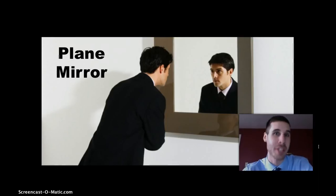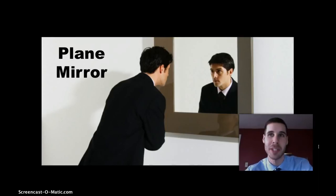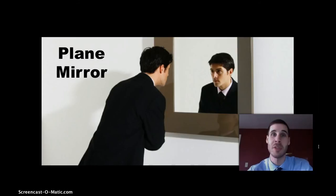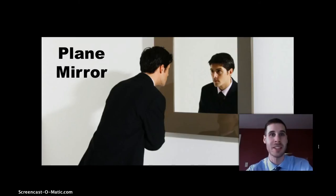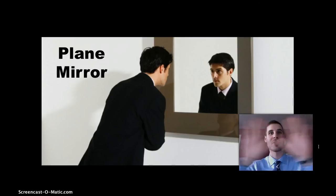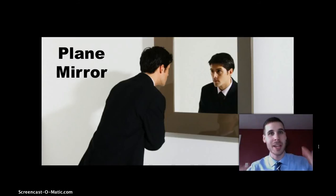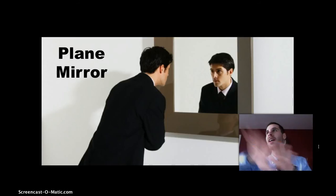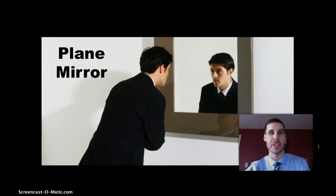First we'll look at the different types of mirrors that are out there — at least the three most common types. The first and most common type is known as a plane mirror, and it's one you're very familiar with — it's the kind that's in your bathroom at home. A plane mirror is called such not because it's shaped like an airplane, but because it's shaped like a plane, as in a flat, two-dimensional surface.